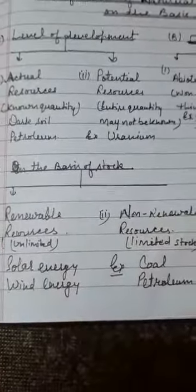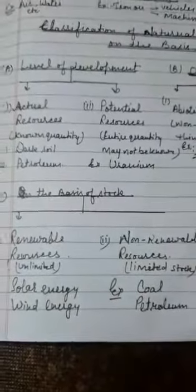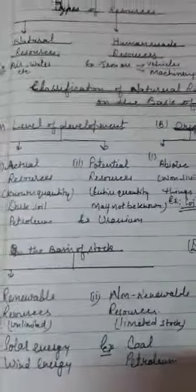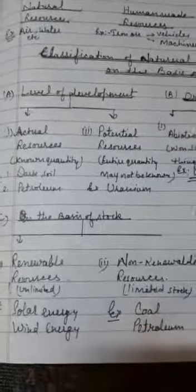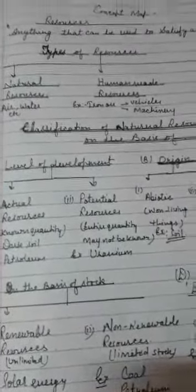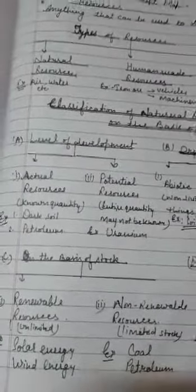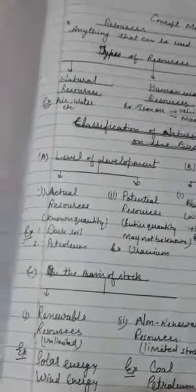Now, on the third basis: on the basis of stock. Stock means kitni unki condition hai, ya kitni unki quantity hai, ya kis tarhe se unka use ho raha hai, aur kitni matra mein woh ja raha hai, aur kitni quantity mein woh waapas aa raha hai. So, total on the basis of stock, there are two categories: renewable and non-renewable.